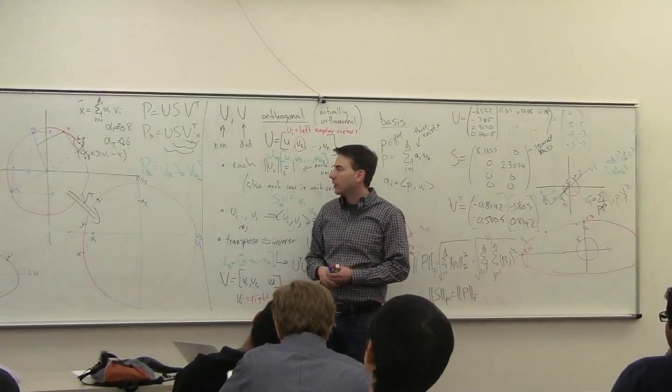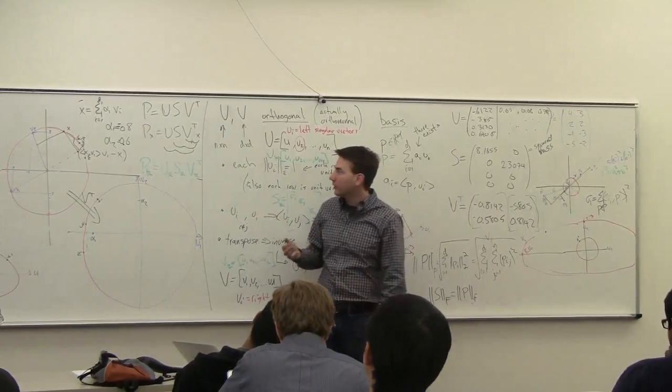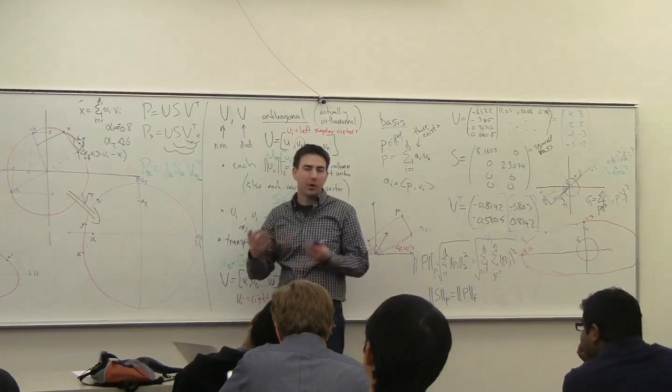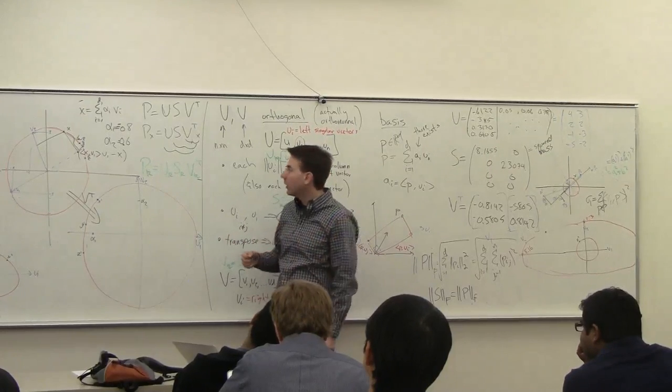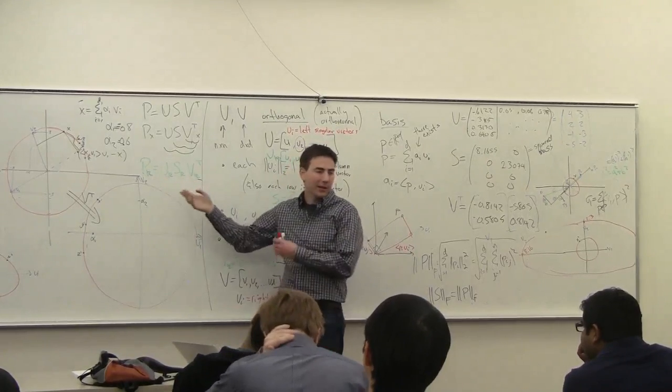The point is that if you have a high-dimensional, say, point set or data set, you can find kind of the lower-dimensional parts of it, the major modes of the variation of the data, by doing the principal component analysis and then extracting out this part.